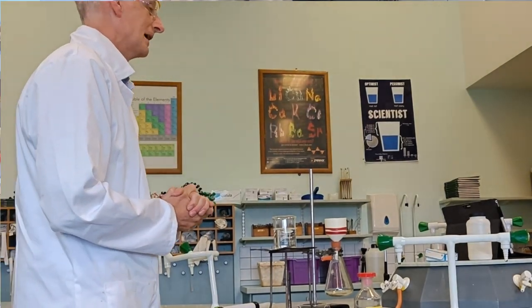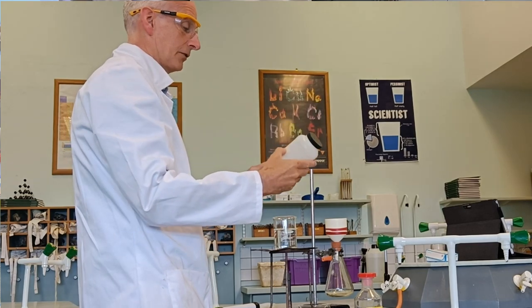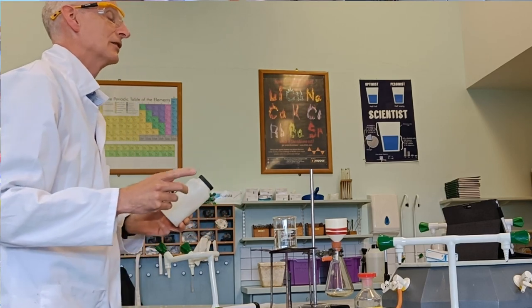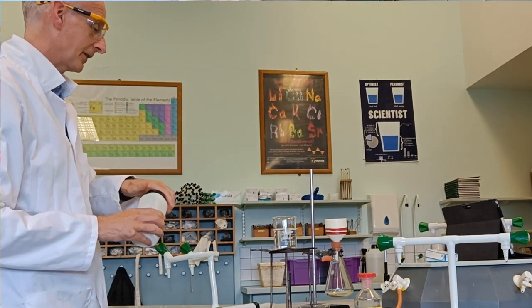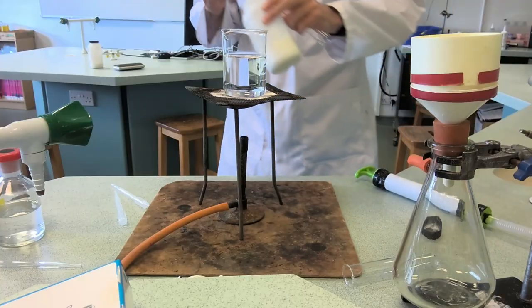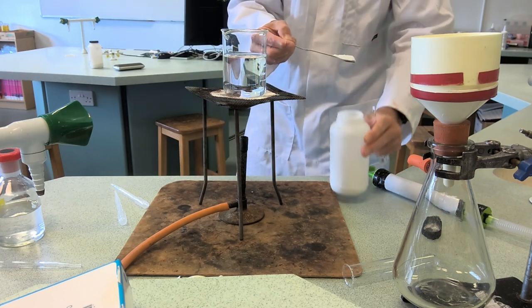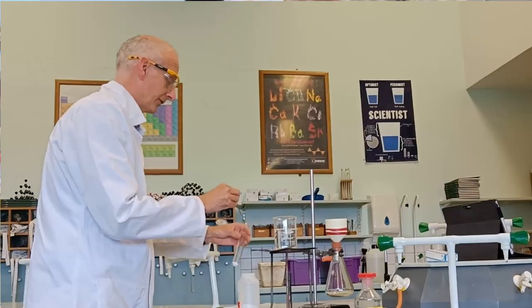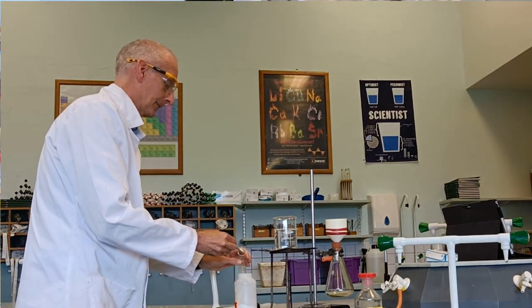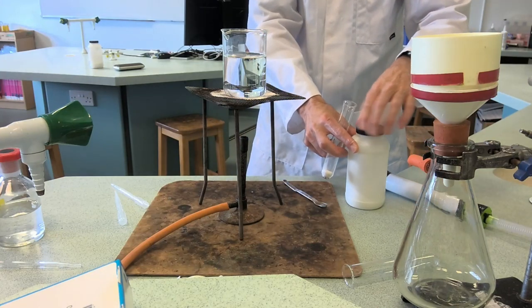Right, so what we've got is some impure benzoic acid with some soluble and insoluble impurities. We're going to take some of this and put it in a boiling tube and into a water bath. I'm going to use two spatulas because the purification process is going to lose us some material.